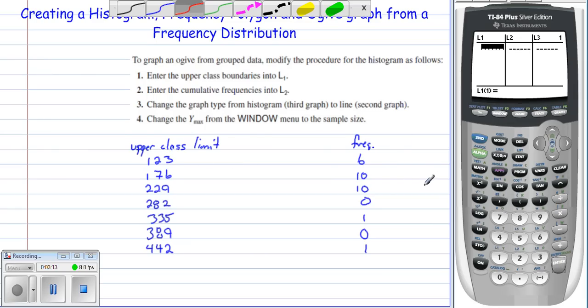And now at this point we need to put our upper class limits in, so we have 123, 176, 229, 282, 335, 389, and 442.